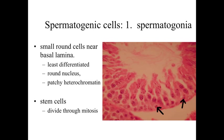Spermatogonia are essentially stem cells — cells that are capable of dividing. Importantly, spermatogonia divide through mitosis, the same process as all other body cells. When they divide they give rise to new cells that are still diploid, still having two sets of chromosomes. So we have some cells that can differentiate while also maintaining a stem cell population.